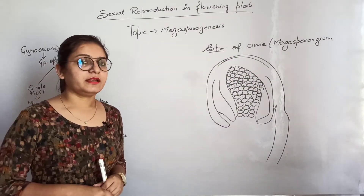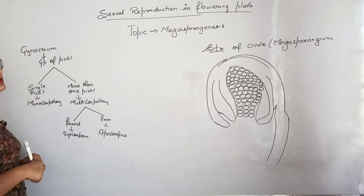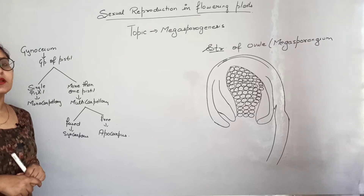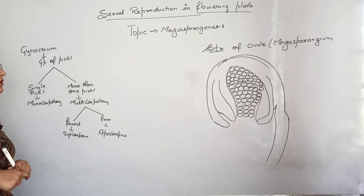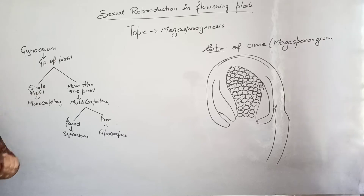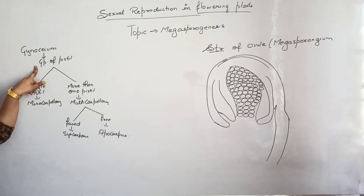Let's start with the next topic: gynoecium, which represents the female reproductive part of a flower. Gynoecium has a group of pistils, so many pistils are present in a gynoecium.